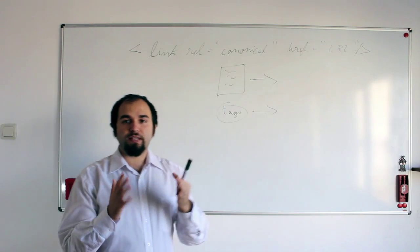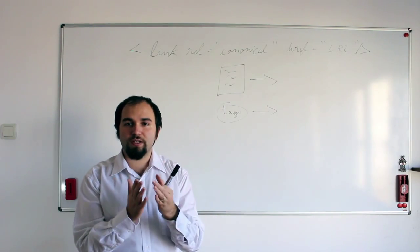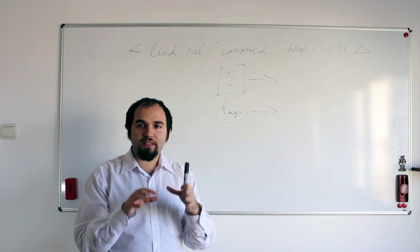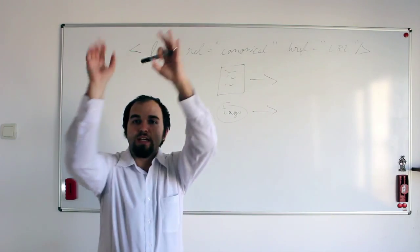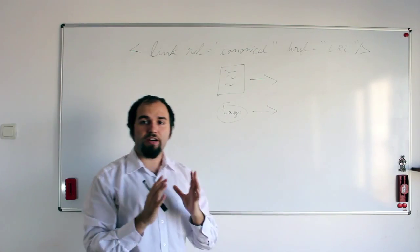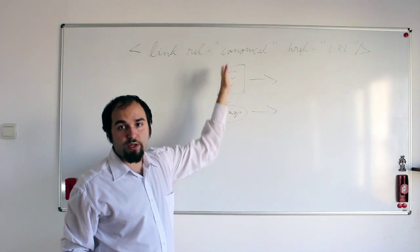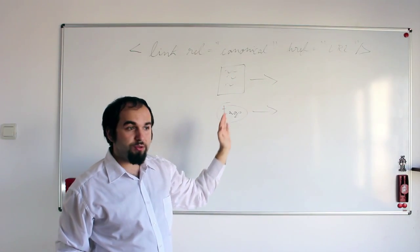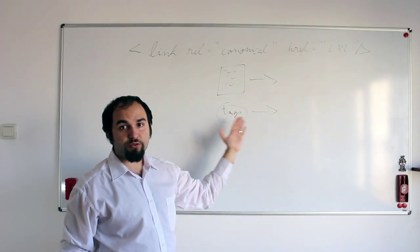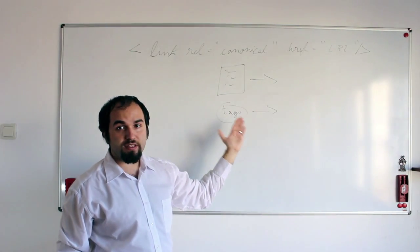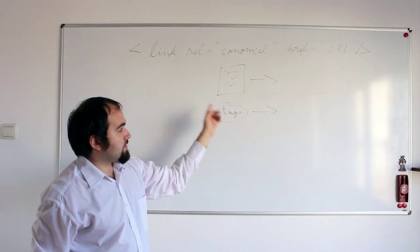Now, you have to think that the crawlers, when they actually go to your website, they try to go everywhere where you have links. So you basically have a link to this page with the article and also there's gonna be another link created for the tag. So the tag will also have a link inside of your website.